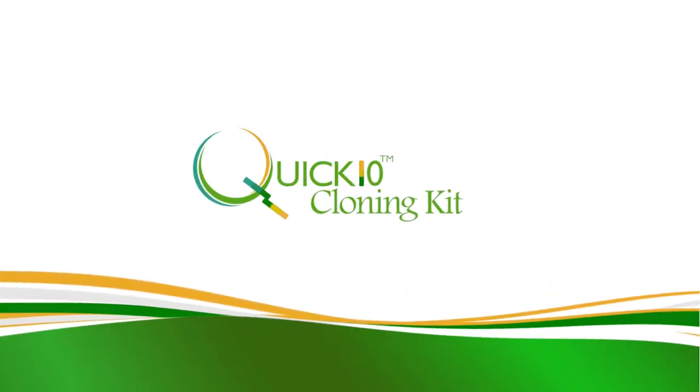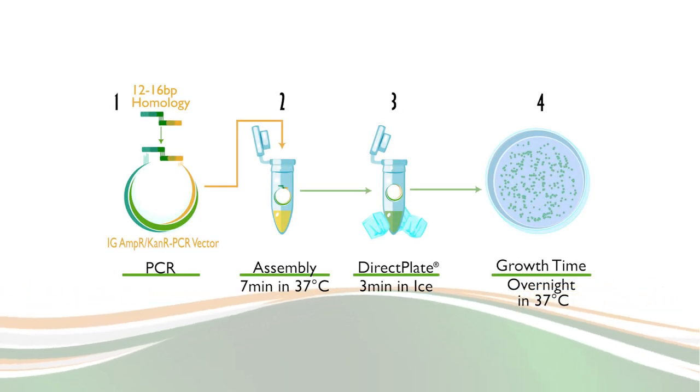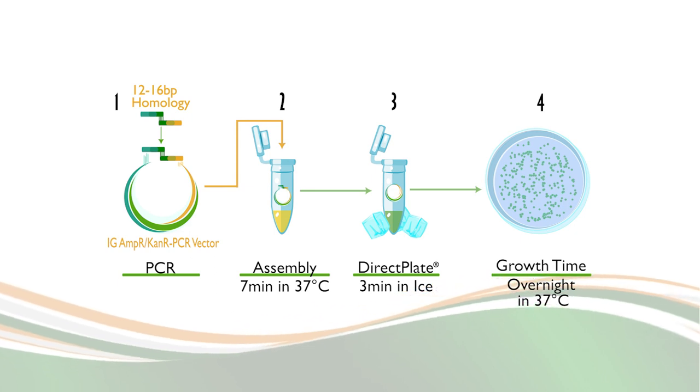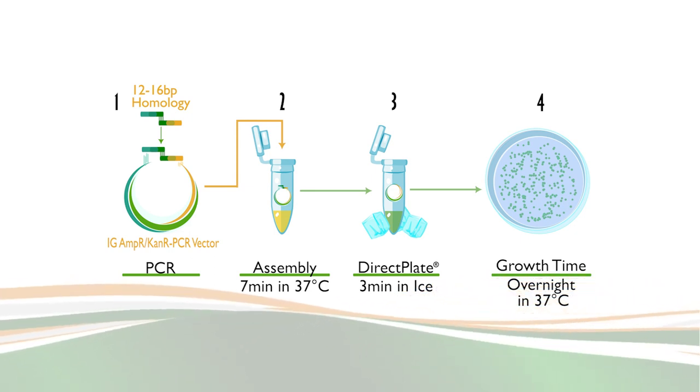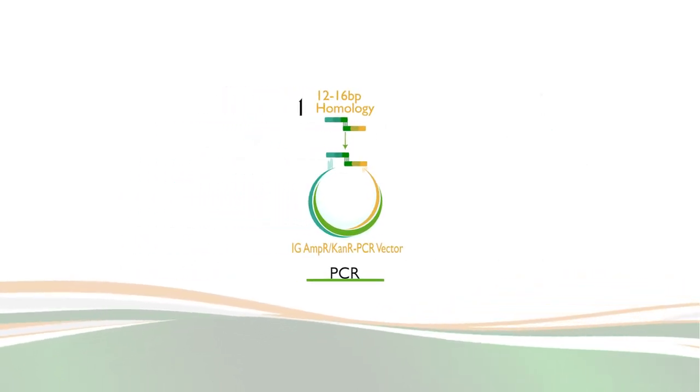As you can see, there are 4 main processes in the Quick 10 assembly and 11 steps in total. Our scientists will demonstrate each step in the process, and we will discuss any key benefits, tips, or tricks to help you have a successful cloning experience.